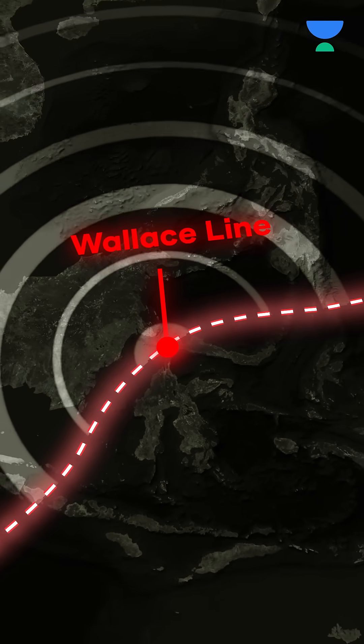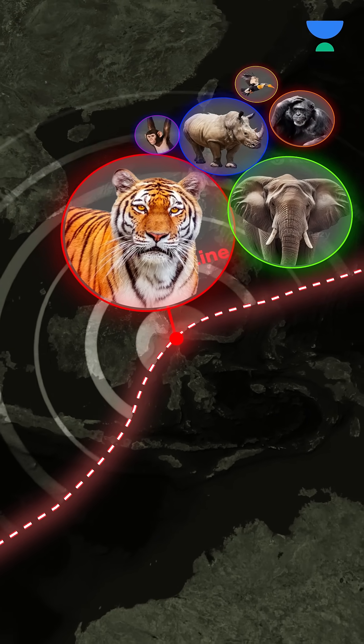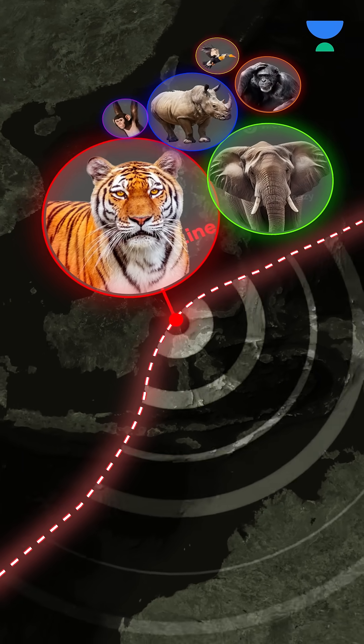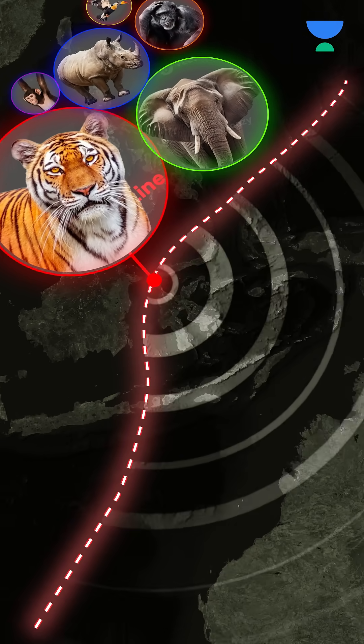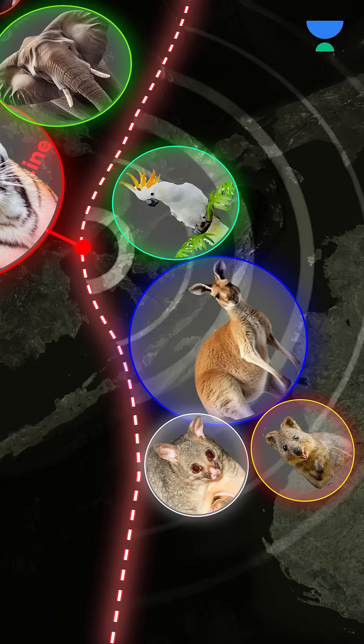you'll find animals like tigers and elephants, which are typical of Asia. To the east, creatures like kangaroos and marsupials dominate, which is characteristic of Australia.